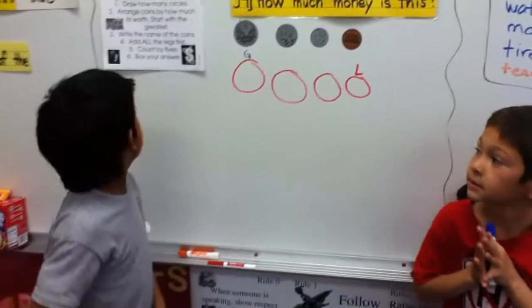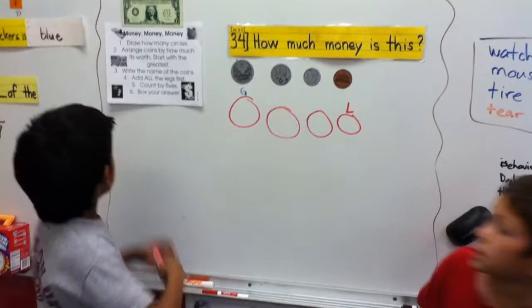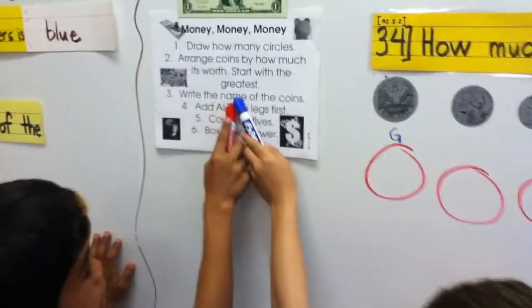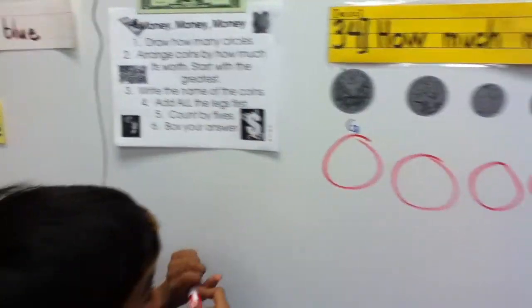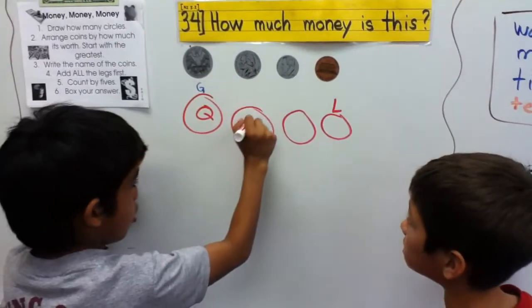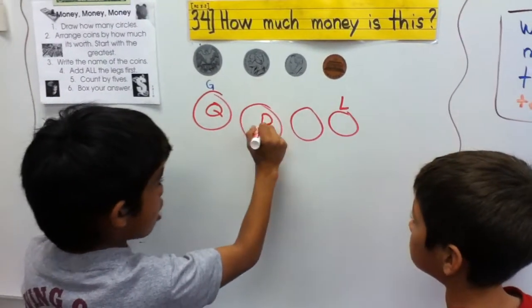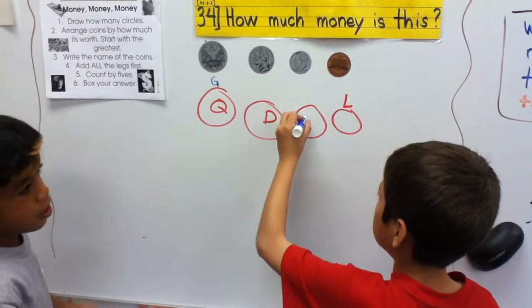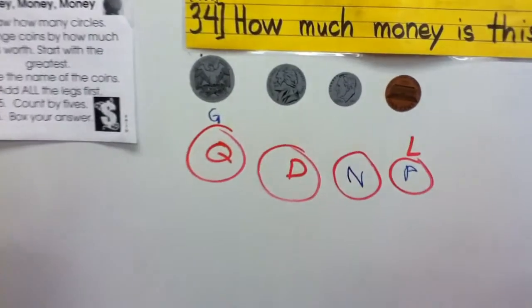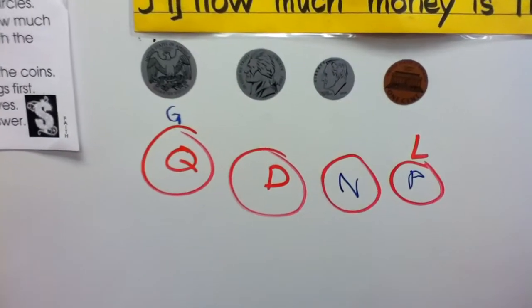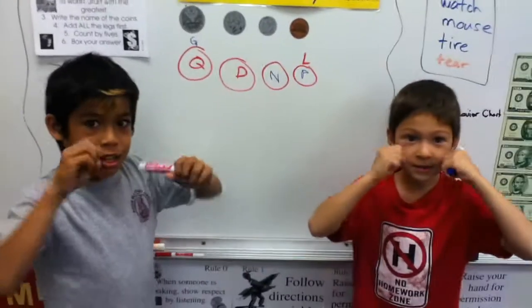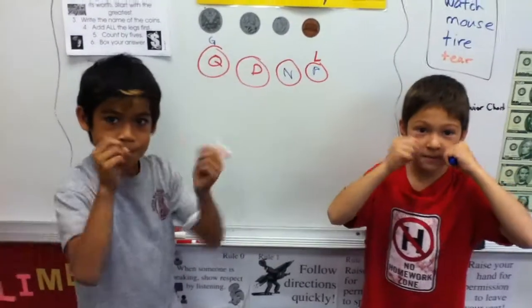Step 3: Write the name of the coins — quarter, dime, nickel, penny. Don't forget the baby penny.